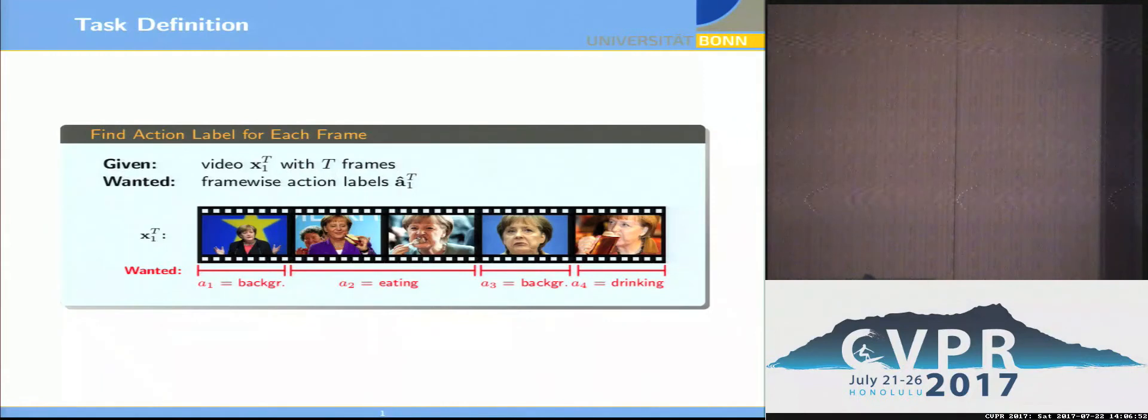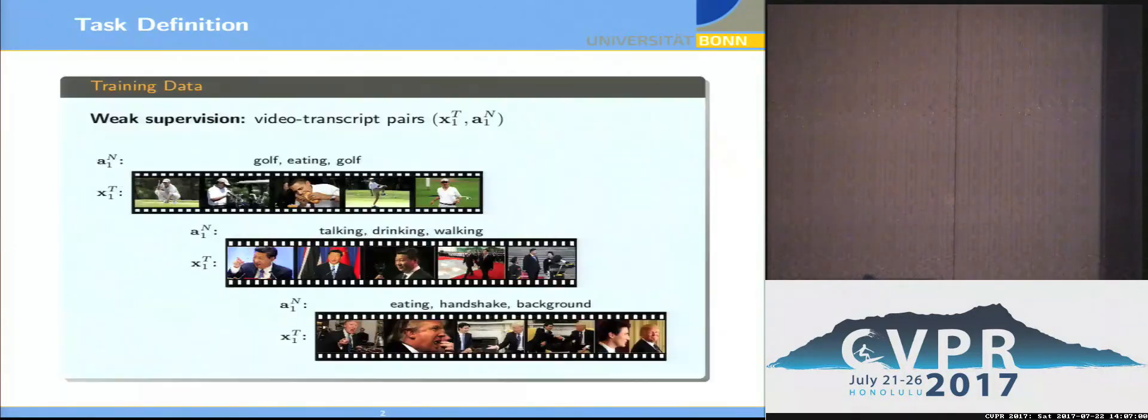This would be quite easy to tackle with deep learning approaches if we had frame-wise annotation in our training data, but we assume that we only have weakly supervised data. So we have multiple videos, and the only annotation that we have is actually the sequence, the ordered sequence of actions that are occurring. For example, here we have Obama, and we only know he's playing golf, he's eating, and he's playing golf again, but we have no clue about where in the temporal position this actually happens.